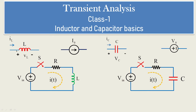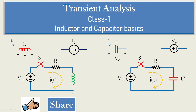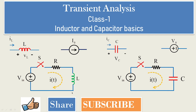In today's class we have seen the basics of inductors and capacitors. Remember the tabular column. In Class 2 we will take these basics and apply them to determine initial conditions, current conditions, voltage conditions, and how transient behavior changes when inductor and capacitor values are changed at different instants of time. I hope you liked this video — please share it with your friends, subscribe to the channel, and press the bell icon for future notifications. Thank you.